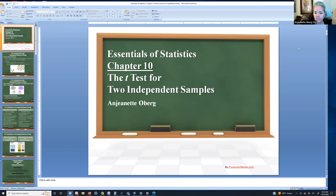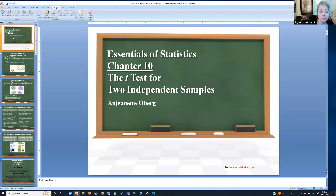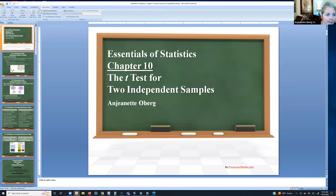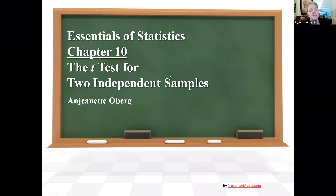So in Chapter 10, we are covering the Independent Measures T-Test, also known as an Independent Samples T-Test. This is going to build on the single sample T, which is a lot like the Z-score. You're comparing a sample to a population where we don't know the standard deviation and/or the mean for the corresponding population, so we substitute and use standard error. Now we're going to build on that concept, and instead of comparing a sample to a population, we're going to compare two separate groups to one another.